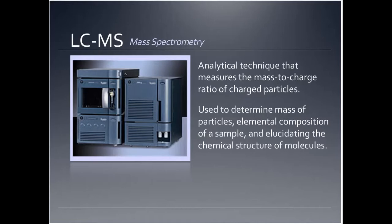Mass spectrometry is a powerful analytical technique used to identify unknown compounds, quantify them, and determine the structure and chemical properties of molecules. Detection can be accomplished with a very small quantity of material, making it very useful in labs that produce limited supplies of product. Mass spectrometry provides valuable information to a wide range of professionals and is often used in pharmaceutical and environmental laboratories — for example, to identify structures of drugs produced or to identify potential toxins affecting local water environments. We have two LC-MS instruments in our lab connected to UPLCs for analysis.